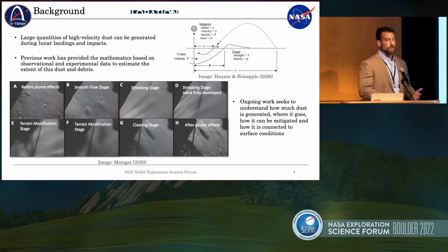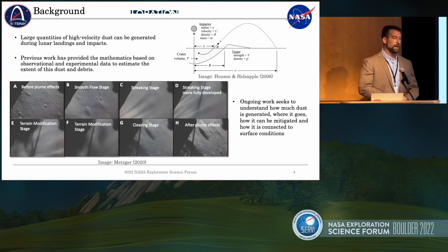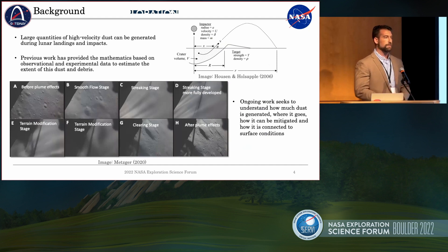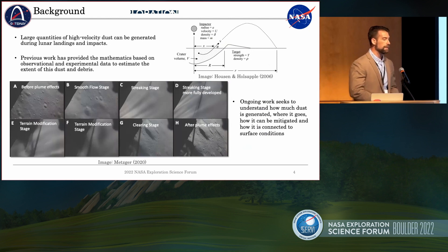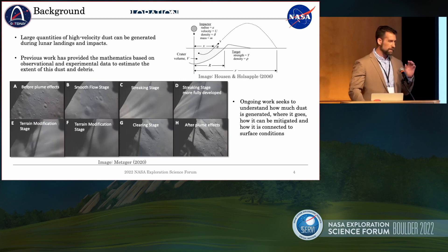High-velocity lunar dust is something that is very concerning. At Swamp Works and Kennedy Space Center, we've done a lot of work with dust mitigation technologies and strategies. But one of the things we haven't really explored too much is the adhesion and ablation characteristics of high-velocity dust. In the past few years, I've been spending a lot of time studying this and seeing how long it stays in orbit, because 5 kilometers per second is well above escape velocity. Some of this tends to stay in orbit for up to 10 years, a very small amount of it.